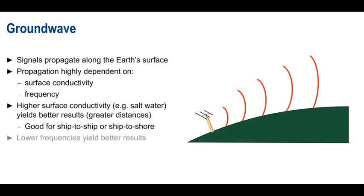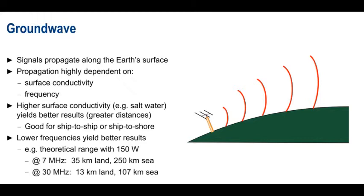With regards to frequency, ground wave works best for lower frequencies. For example, the theoretical range of a 150 watt transmitter at 7 MHz is 35 km over land, and close to 250 km over the sea. At 30 MHz, however, our range falls to only 13 km over land, and just over 100 km at sea.